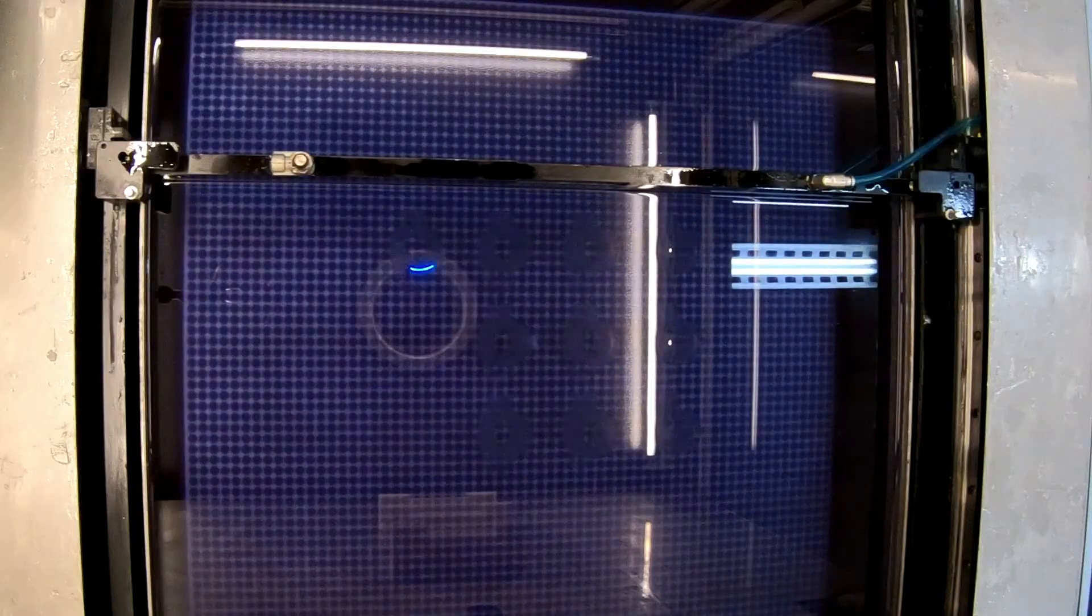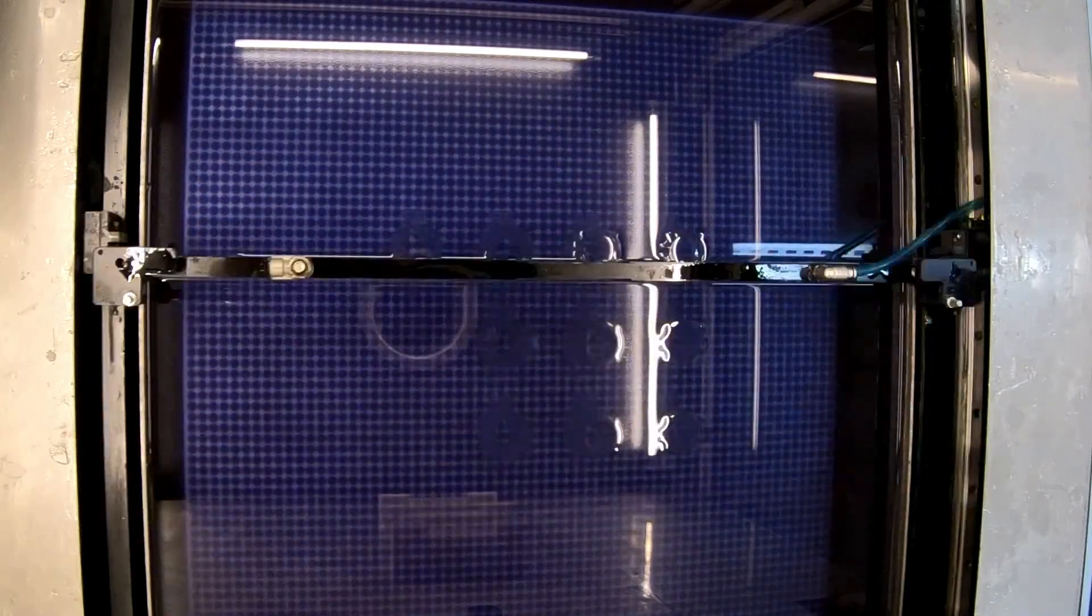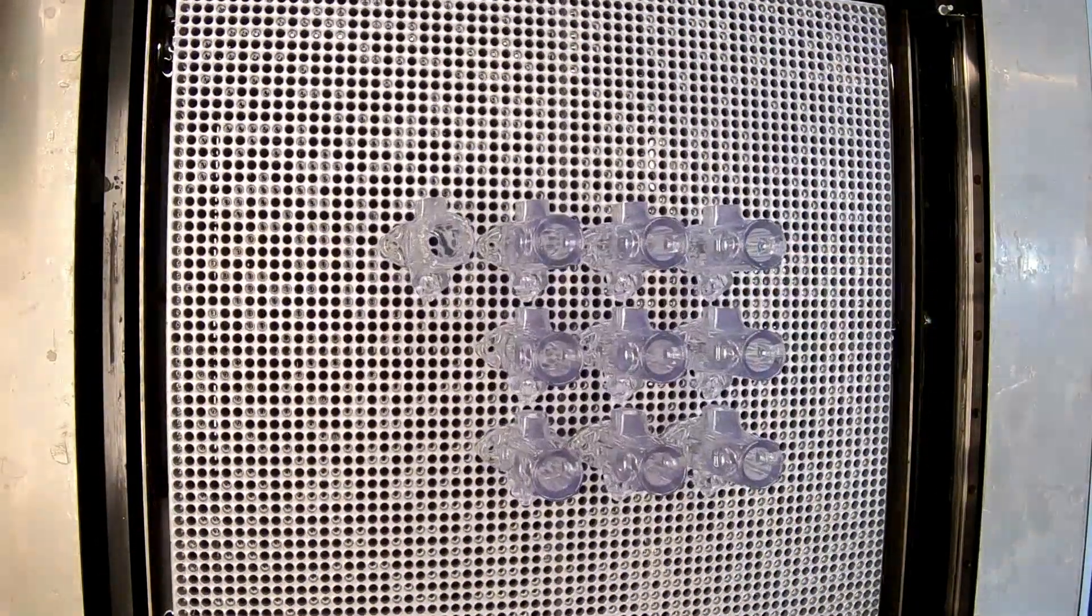Often times when people think of 3D printing metal, their first thought goes to a direct metal laser sintering process. The advantage of using the V650 to create this process is you get the same benefits of a metal part, but without all the challenges that go into the direct metal printing process.